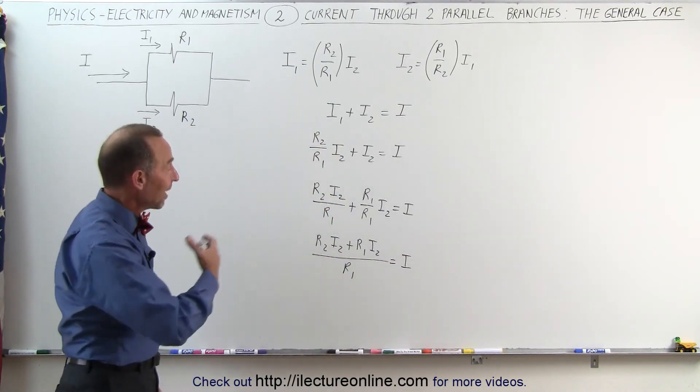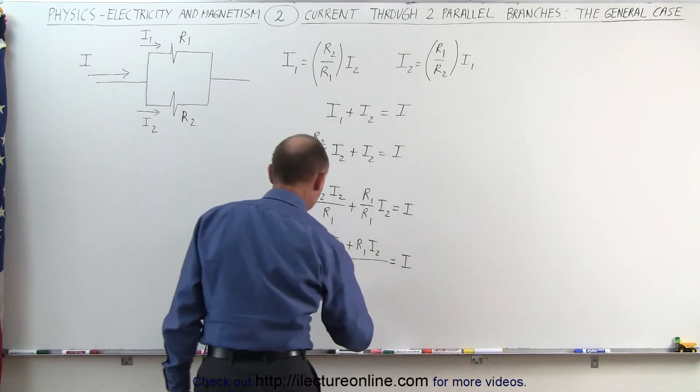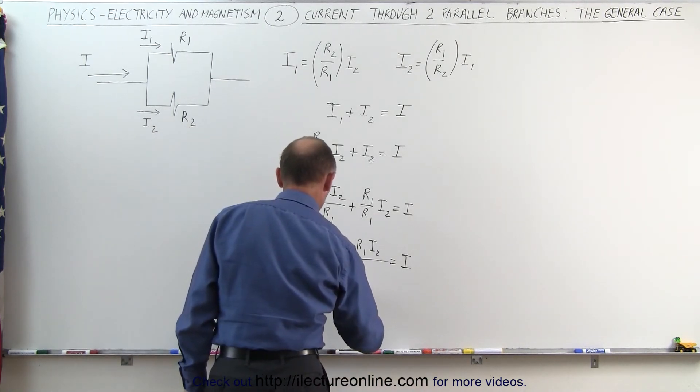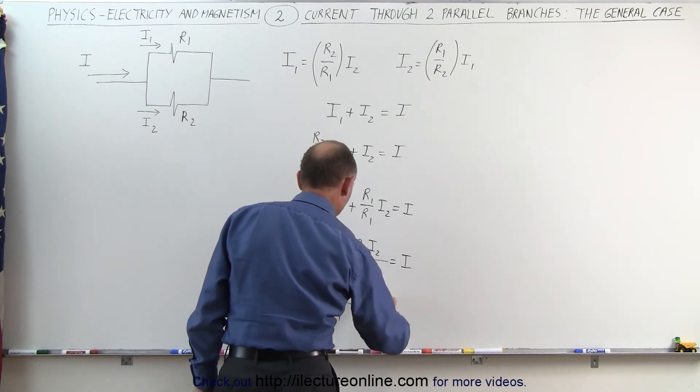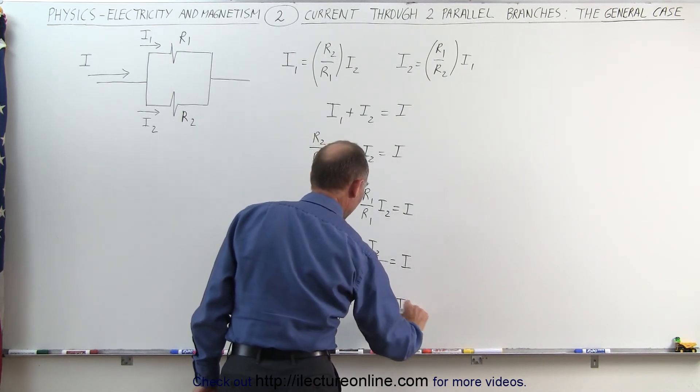Now notice that both terms on the left side have the same common denominator, R1. I can now combine those two. I can now say that R2 times I2 plus R1 times I2 divided by R1 is equal to the total current I. And then if I factor out an I2, I can then write that R2 plus R1 over R1 multiplied times I2 equals I.